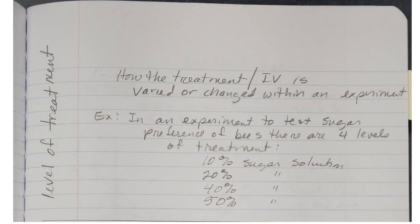So if I'm testing to see what bees prefer, I'm going to have a solution that has no sugar in it and then a solution that does have sugar in it. So the independent variable is the different types of solutions. Level of treatment is how do I vary that independent variable. So if the independent variable is the type of solution, the type of sugar solution, then I can vary it by having different amounts of sugar.